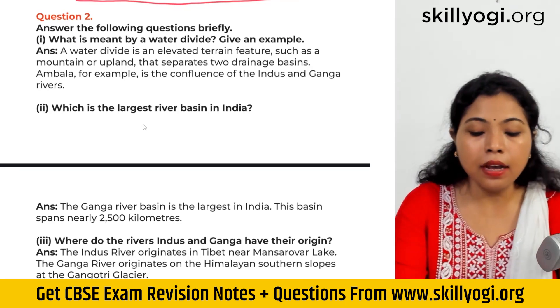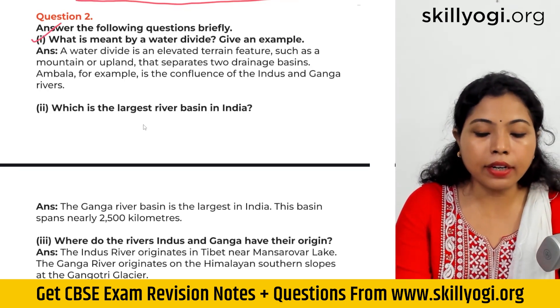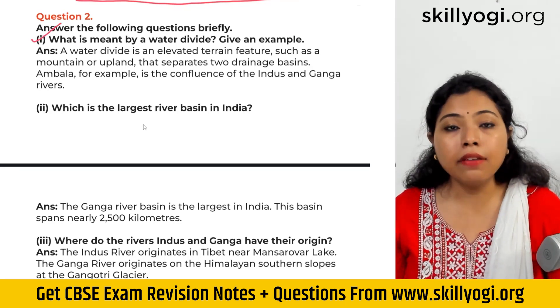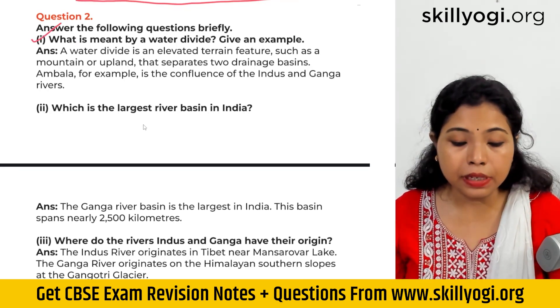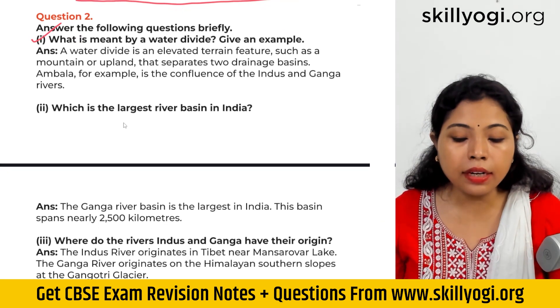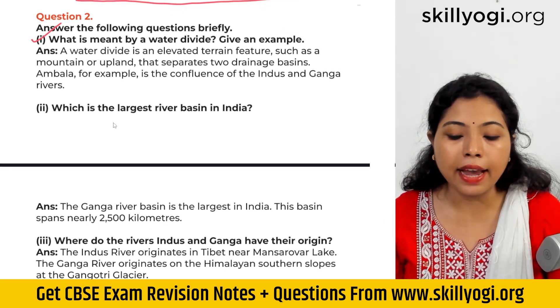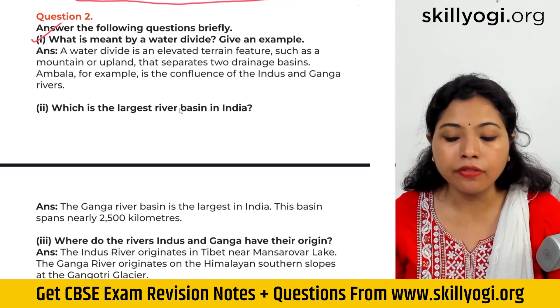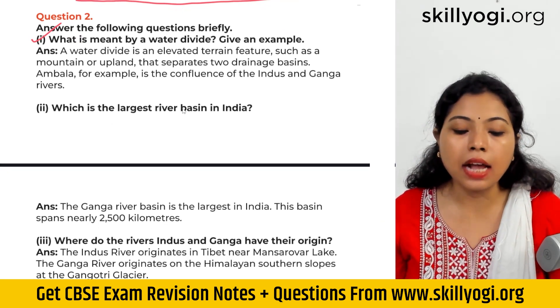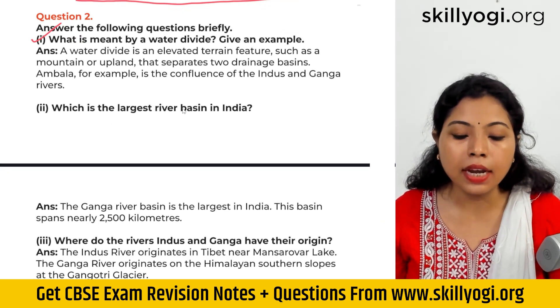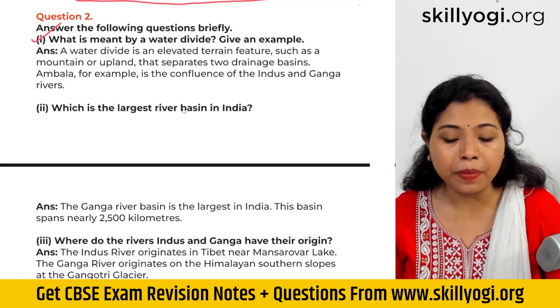What is meant by a water divide? Give an example. A water divide is an elevated terrain feature such as a mountain or upland.